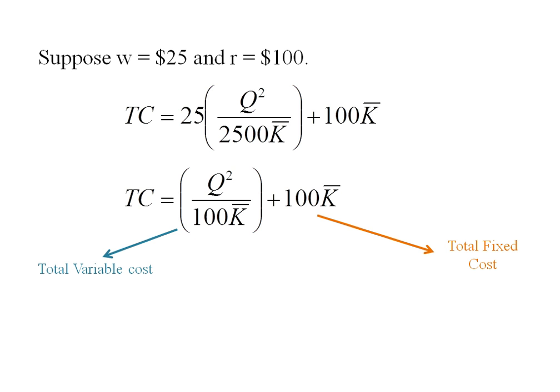The first term here, the Q squared over 100 K bar, is my total variable cost, and the second term there is the total fixed cost, because in the short run we can divide our total costs into those two components.